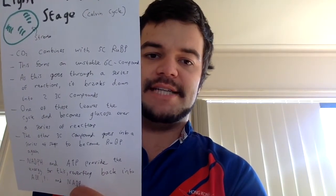Ultimately, we get glucose out of this. One of those three-carbon compounds leaves the cycle and becomes glucose over a series of reactions. The other goes through a series of steps to form back into RUBP — hence why it's called a cycle. At the VCE year 12 biology level, you don't need much more detail than that. Just know that carbon dioxide combines with another molecule, that splits into two molecules, one goes off to form glucose, and the other goes around to form back into the molecule to combine with more carbon dioxide.